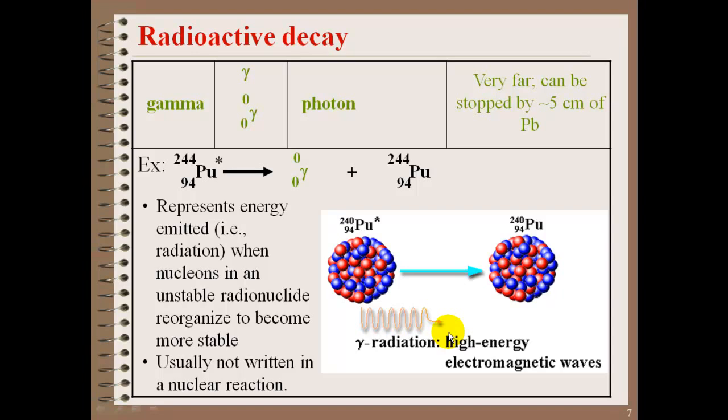It's usually not written in a nuclear reaction. You'll usually see it accompany other reactions, like an alpha decay. If an alpha decay occurs, you now have a new nucleus, which needs to reorganize and shift to become stable, and then gamma radiation will be given off at the same time.